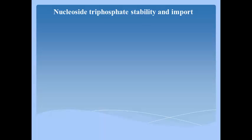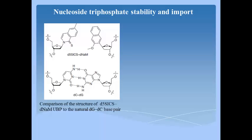Unnatural base pairs used in the study are structurally compared with deoxycytosine and deoxyguanine as shown in this figure.